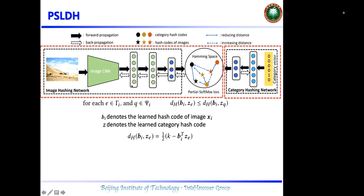This can be formulated as an inequality, where B_i denotes the learned hash code of image X_i, and Z denotes the learned category hash code. Γ_i denotes the set of categories that image X_i belongs to, and Ĉ_i denotes the set of categories that image X_i does not belong to.